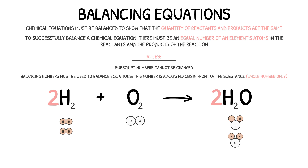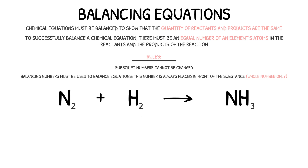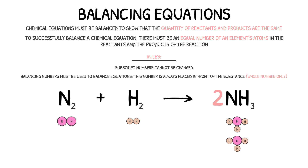Let's take a look at one more example. In this reaction, nitrogen and hydrogen gas react to form ammonia. In the reactants we have two nitrogen atoms and two hydrogen atoms, and in the products we have one nitrogen atom and three hydrogen atoms. This equation is not balanced. We can start by balancing the nitrogen atoms — there are two nitrogen atoms in the reactants and only one in the products. If we place a two before the ammonia, we now have two molecules of ammonia in the products, meaning two atoms of nitrogen and six atoms of hydrogen.